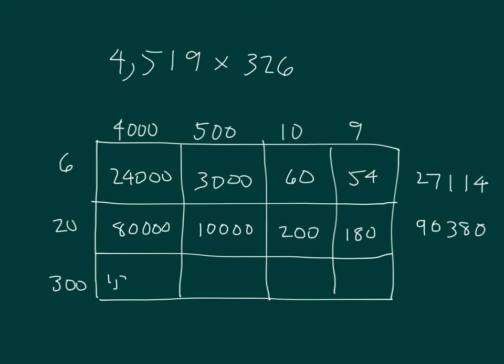Next, this is 1,200,000. 300 times 500, 1, 2, 3, 4 zeros and then 3 times 5 is 15. That's 150,000. 300 times 10 which is 3,000 and then 300 times 9 is 2,700. Adding those together I get 1,355,700.